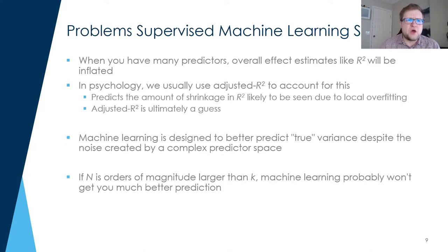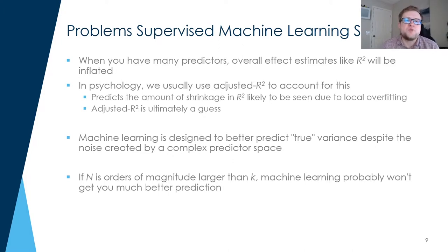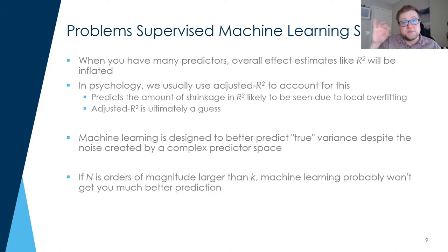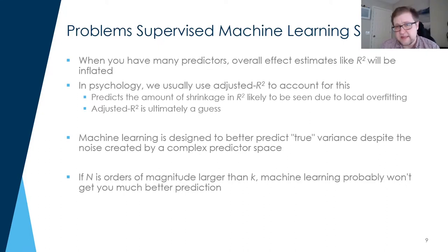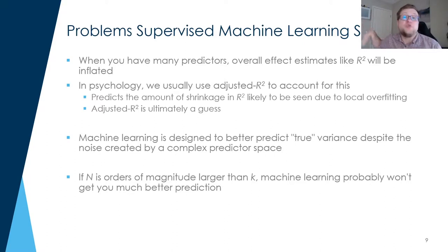Why use supervised machine learning? When you have a lot of predictors — a very complex predictor space — the overall effect estimates, like R-squareds, start to become inflated. This is what we call an N-to-K ratio problem. When your N-to-K ratio is low — when you have a relatively small number of cases per variable — then our traditional methods start to break down. Say you have 50 variables and 100 cases. What regression naturally does is optimize itself to the dataset you have, not to a more generalizable set of datasets you might have in the future. So you end up with very inflated estimates of R-squared.